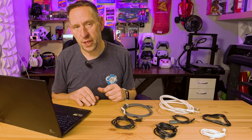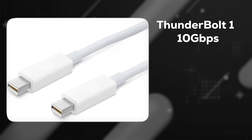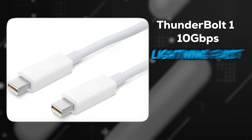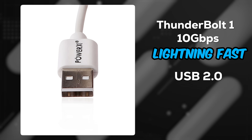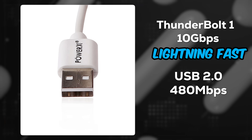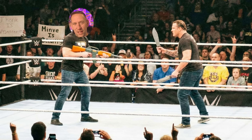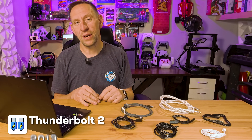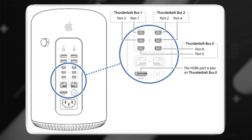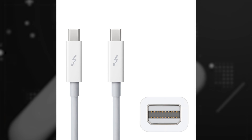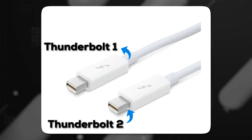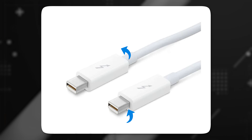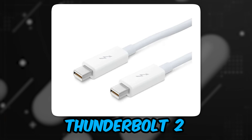Thunderbolt 1 and 2 used the mini DisplayPort shape. Thunderbolt 1 was 10 gigabits per second, which was lightning fast compared to USB 2.0 at 480 megabits per second — the standard at the time. It was like bringing a gun to a knife fight. Thunderbolt 2 arrived in 2013; it didn't change the plug, it just bonded the two 10 gigabit-per-second channels into one 20 gigabit-per-second pipeline. To spot the difference, check the logo — Intel started putting a little 2 next to the Thunderbolt symbol.